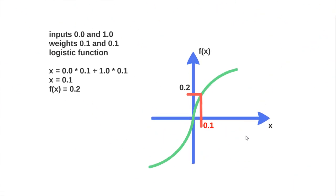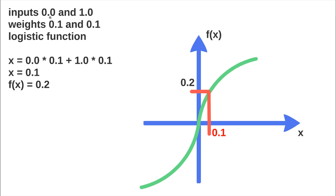Let's see how it works. The input is composed by the same computation: the input times the weight. So 0.0 times 0.1 plus 1.0, which is the second input value, times 0.1.